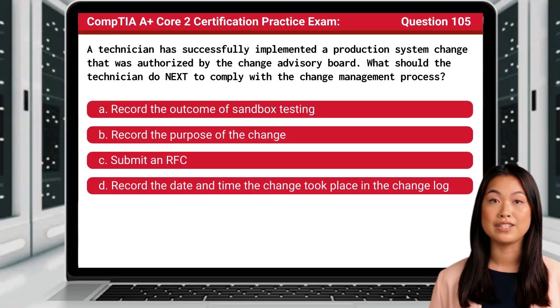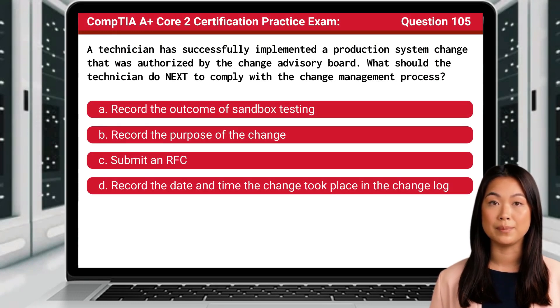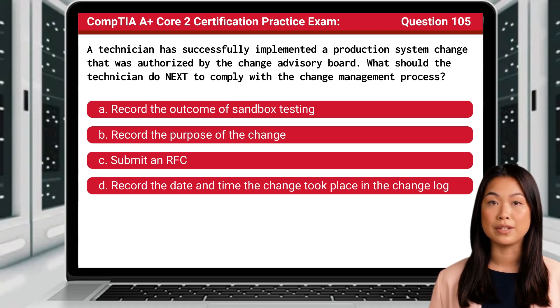Question 105. A technician has successfully implemented a production system change that was authorized by the Change Advisory Board. What should the technician do next to comply with the change management process?